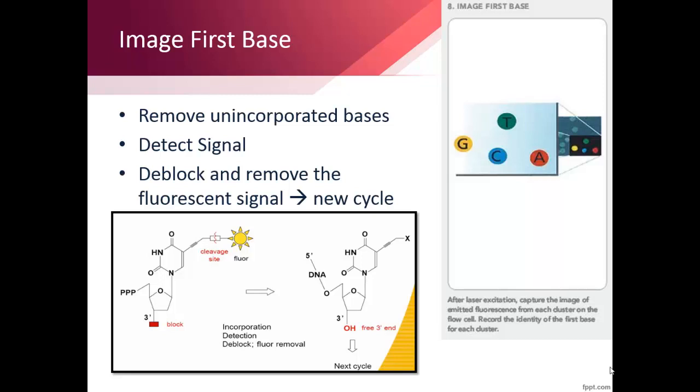These nucleotides were also modified so that there is a molecule on the three prime end of the sugar. This means that the polymerase can only add one nucleotide to each of the newly forming sequences and is blocked from adding any more.